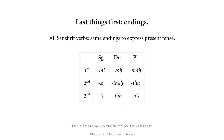The best way to familiarize yourself with those endings is simply to say them out loud a couple of times. So what we have is: mi, si, ti, vaḥ, taḥ, taḥ, maḥ, ta, nti. Note that there are three endings that sound fairly similar, especially for English ears, so make sure you keep the dual forms taḥ and taḥ and the second person plural form taḥ as separate as you can.